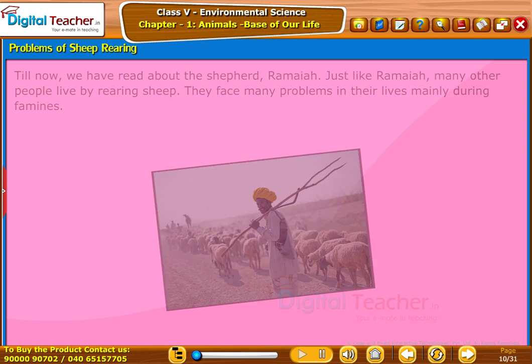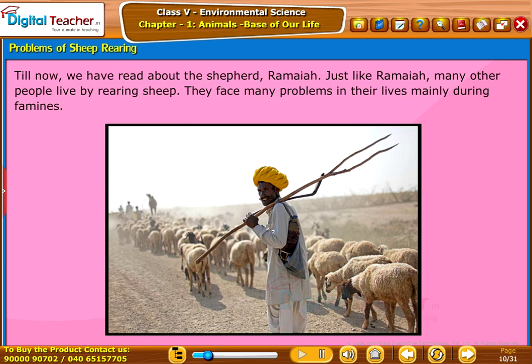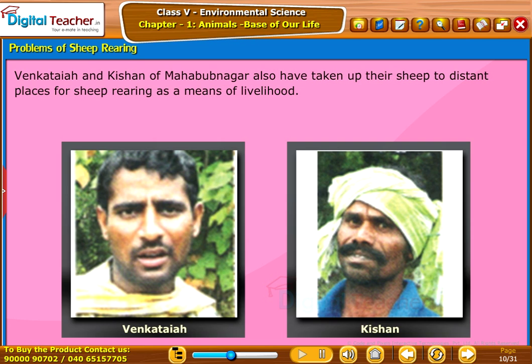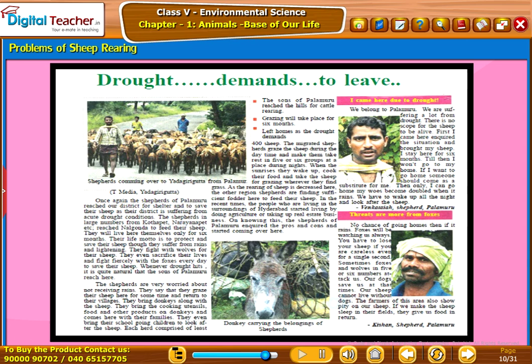Just like Ramaya, many other people live by rearing sheep. They face many problems in their lives, mainly during famines. Venkataya and Kishan of Mahabub Nagar have also taken their sheep to distant places for sheep rearing as a means of livelihood. A newspaper article gives information about the problems faced by these shepherds.